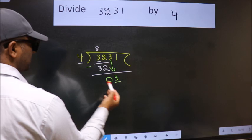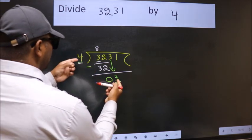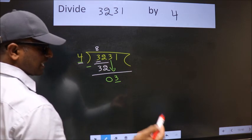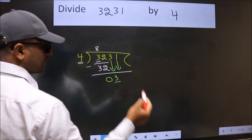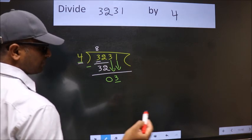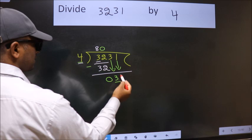Now here we have 3, here 4. 3 is smaller than 4, so we should bring down the second number. And the rule to bring down the second number is: put 0 here. Then only we can bring this number down.